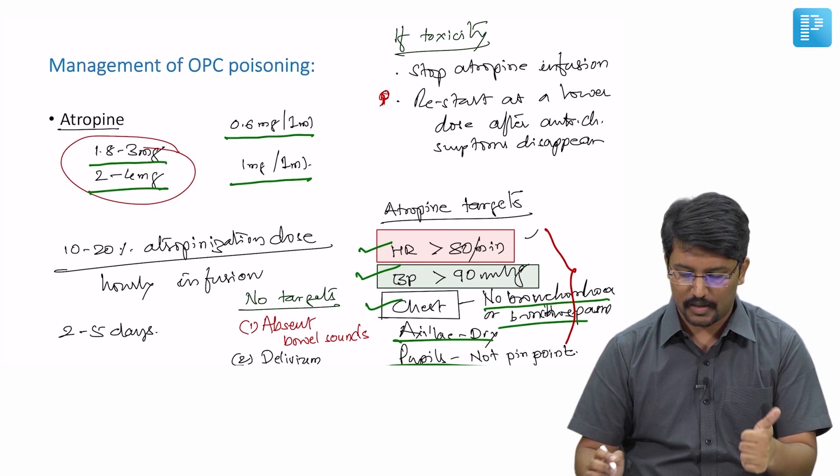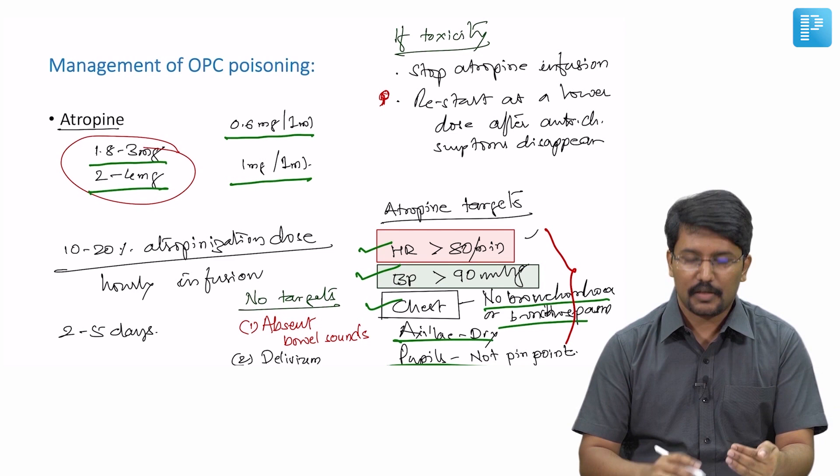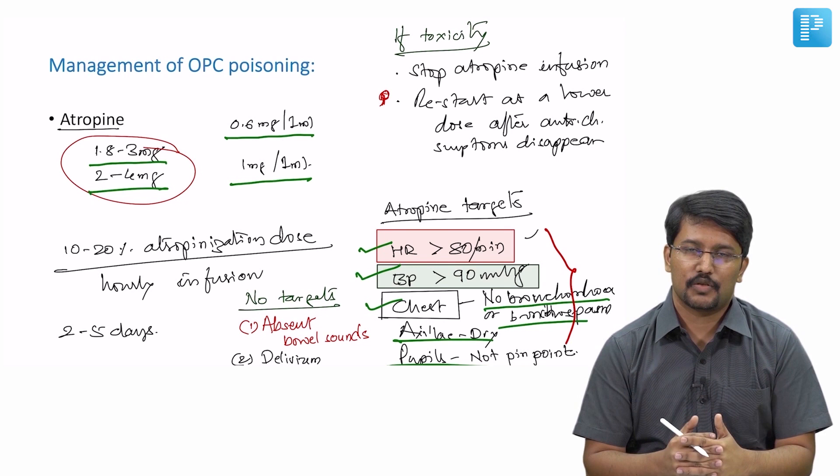Out of them, these three - heart rate more than 80, BP more than 90, and absence of bronchorea and bronchospasm - are mandatory targets to be achieved for negating the negative effects of organophosphate on the system. When we administer repeated doses of atropine and we have reached the atropine targets, then comes the question, should we give the maintenance dose and at what levels?